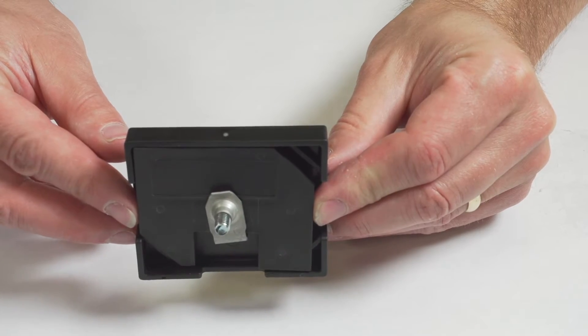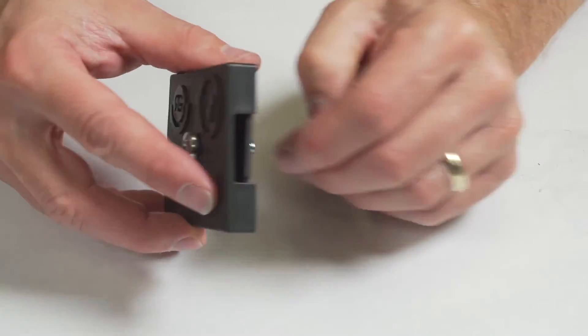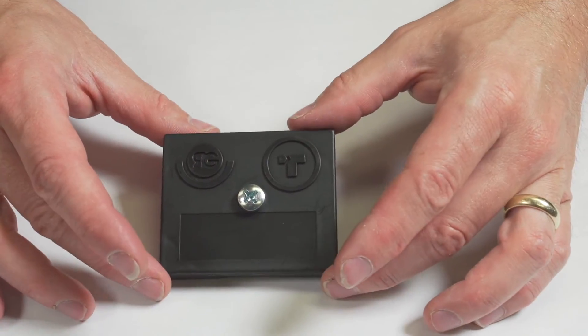Once installed, the fastener is hidden, but the head of the screw is visible, making this a serviceable joint.